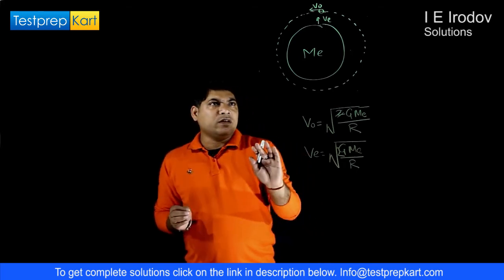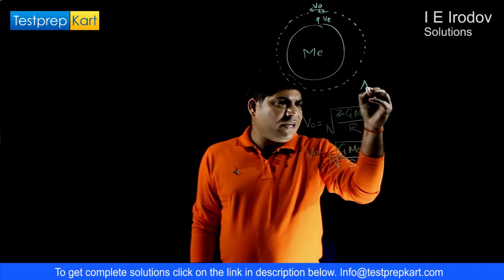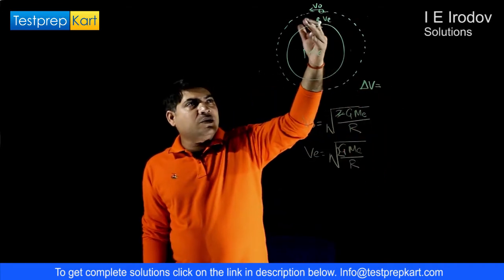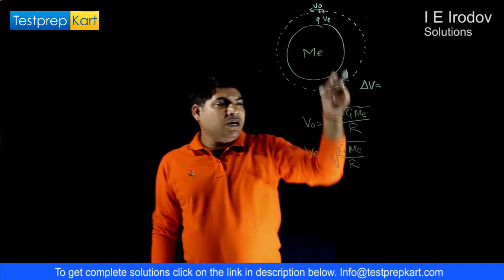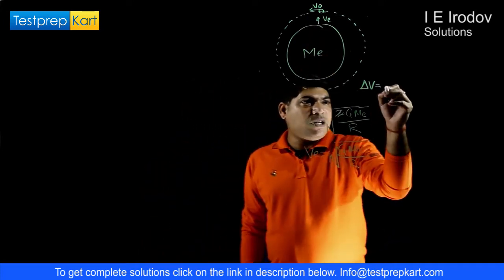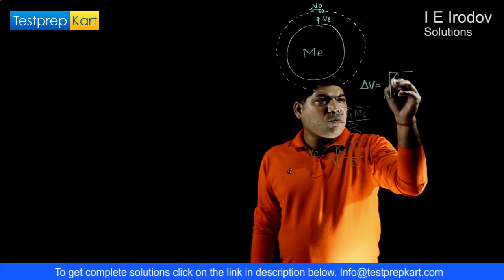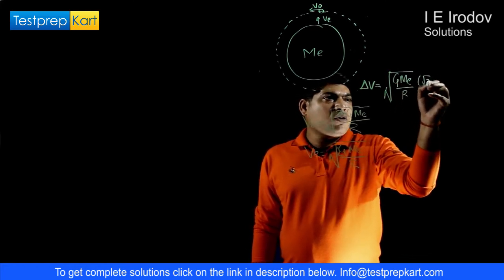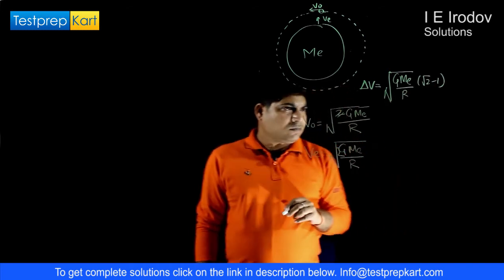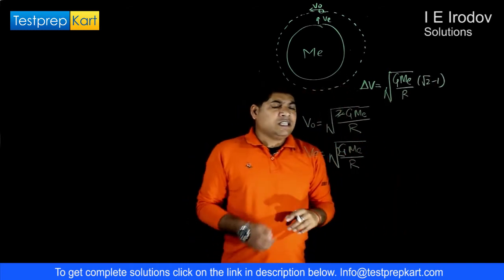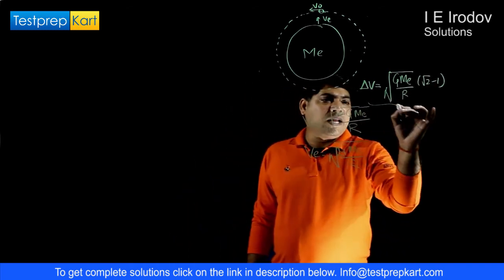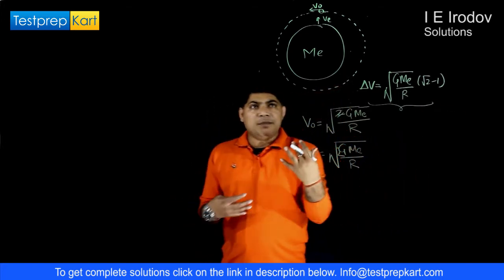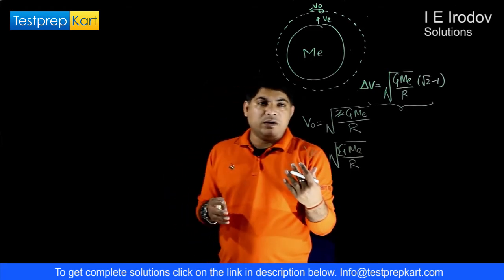If we calculate the velocity difference needed to escape this object from the gravitational pull, the difference of these two velocities would be sqrt(GM_e / r) times (sqrt(2) minus 1). This much velocity difference is required when you try to take an object away from the gravitational pull.